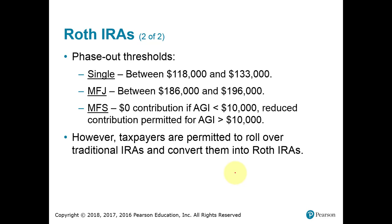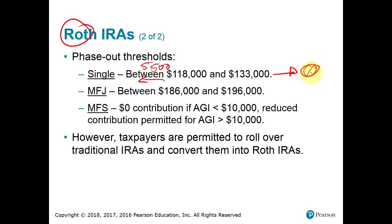Here's the phase-out range for contributing to a Roth IRA — remember, no deduction, but a phase-out range for contributing in the first place. If you're single and your AGI falls below $118,000, you can contribute the full $5,500 limit. If your AGI is above $133,000, you can contribute zero. If your AGI falls within the range — which looks like a $15,000 total range — then your limit would be prorated. Different amounts apply for married filing jointly.